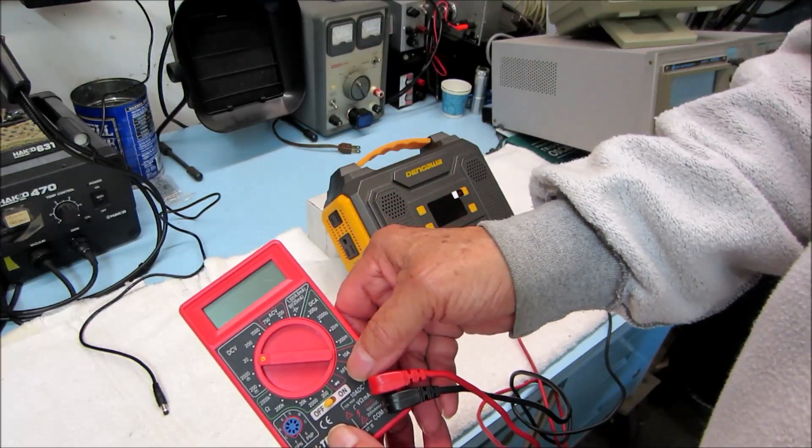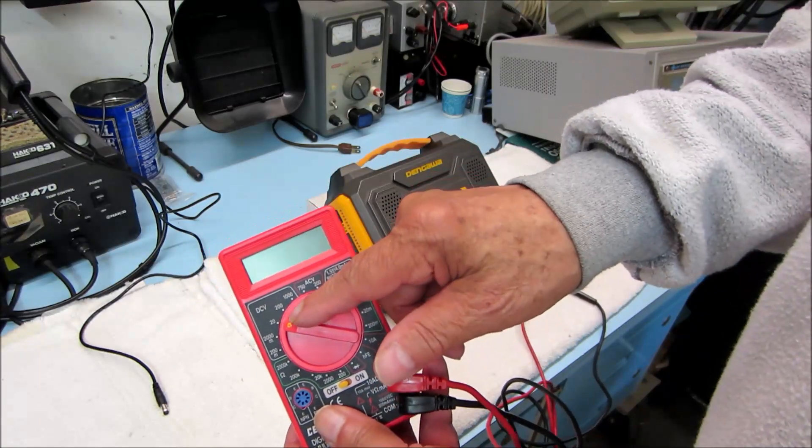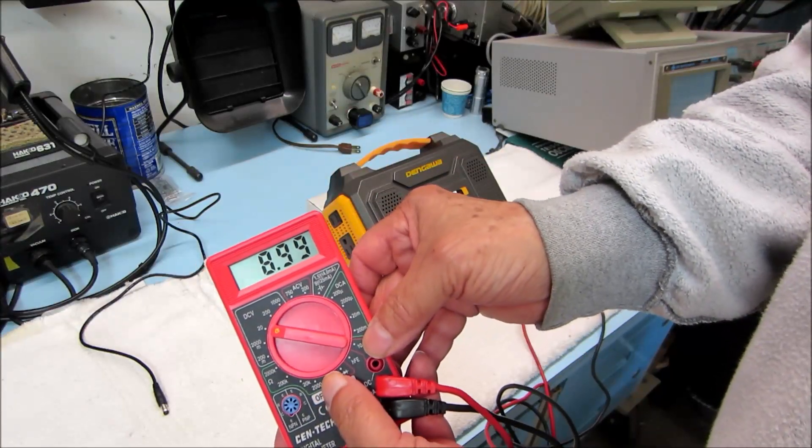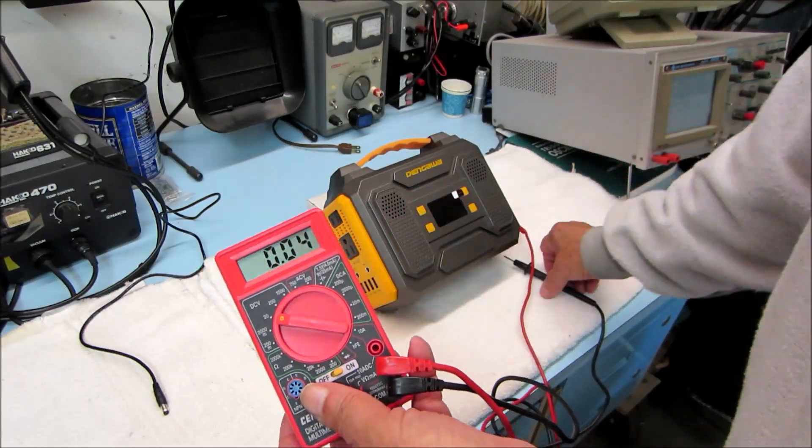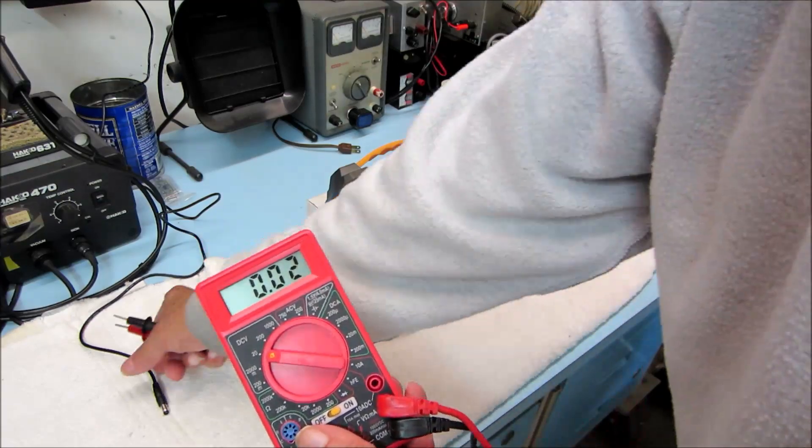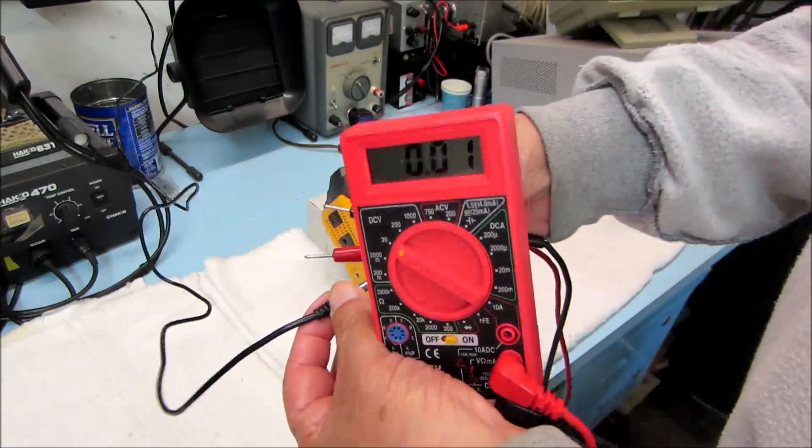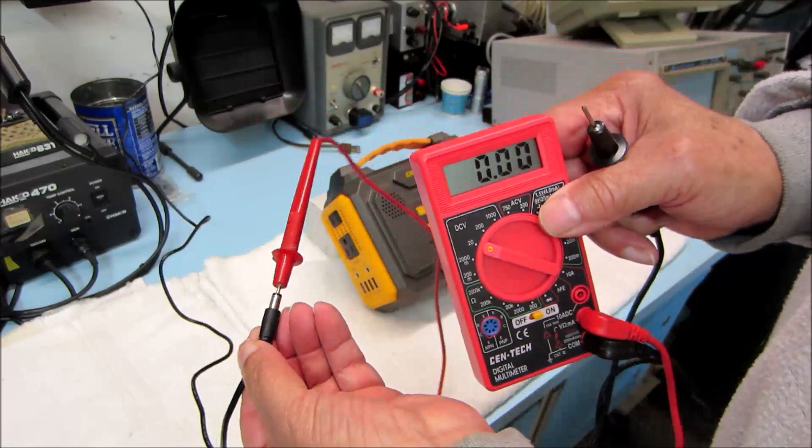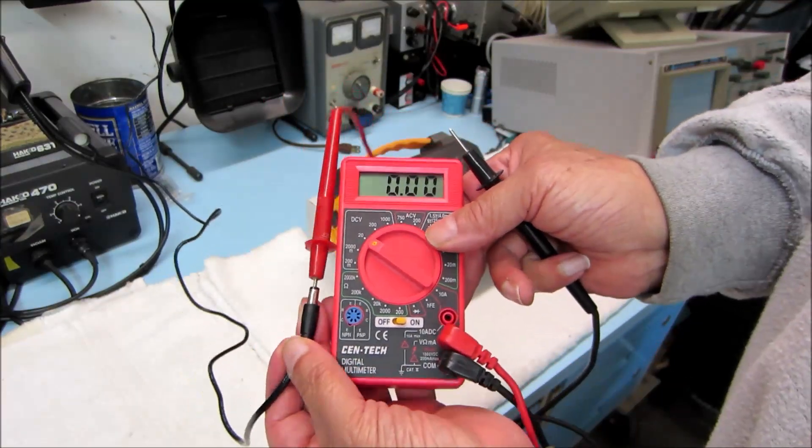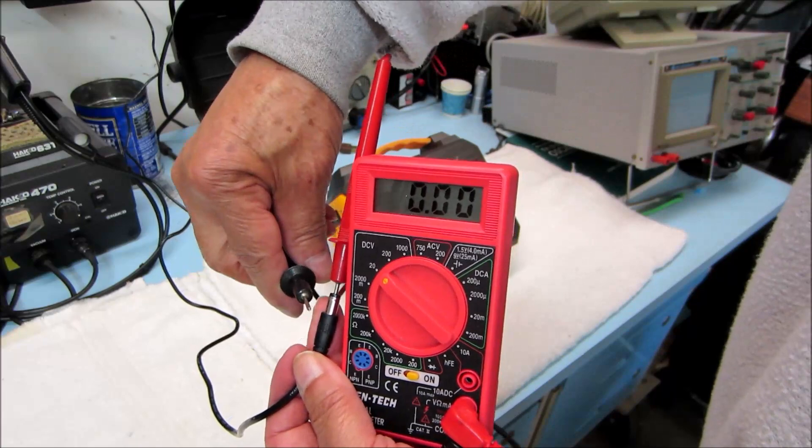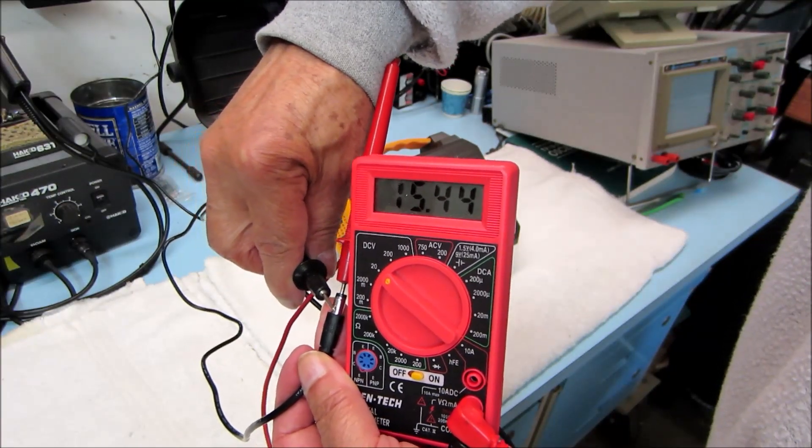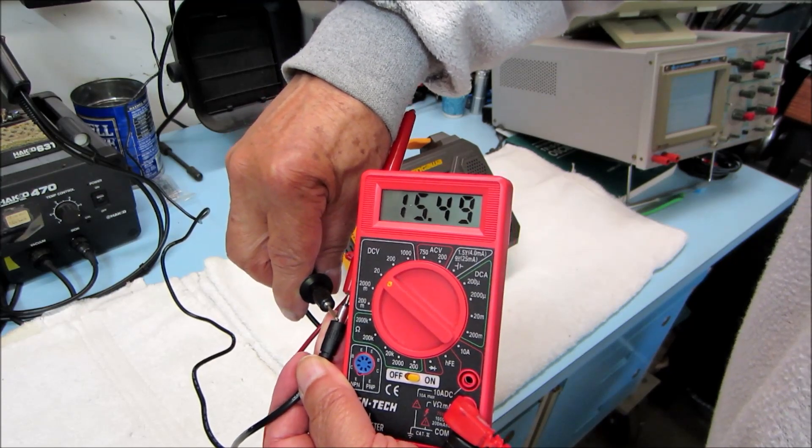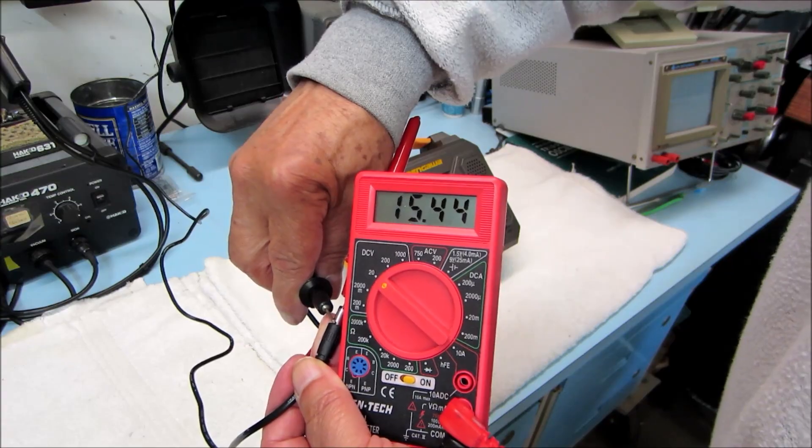So the first thing to do is to verify charge voltage. We'll set our little meter to 20 volts DC, turn it on, put the positive probe right down the barrel, just touch the negative probe there. 15 and a half volts, 15.44, that's 15 and a half volts, right on the money.